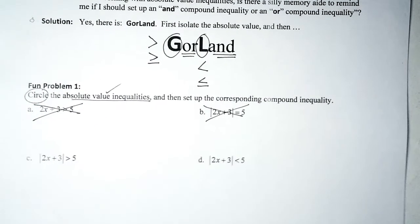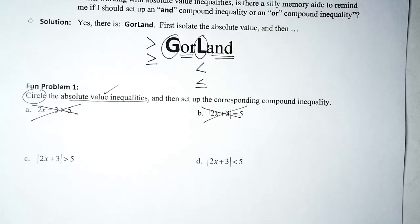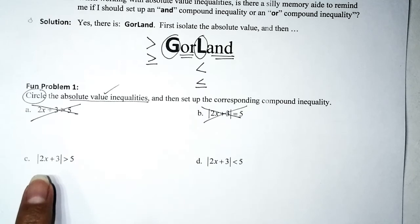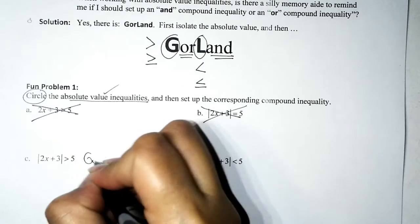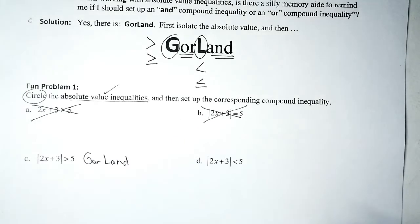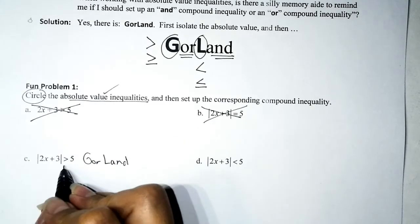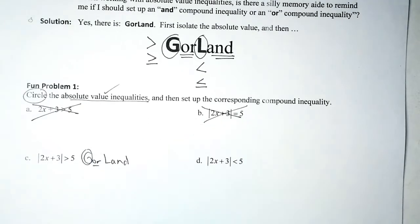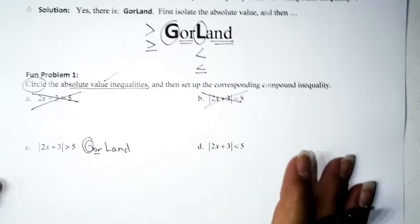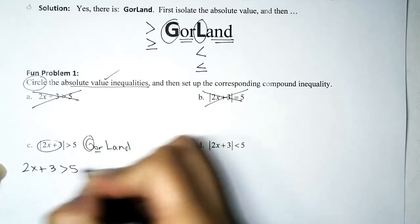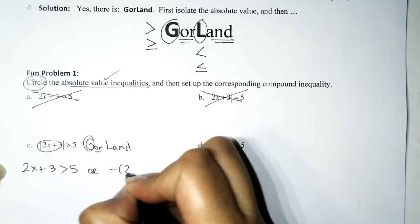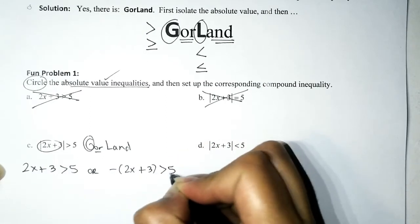Problem C has both an absolute value and an inequality symbol — it's an absolute value inequality. Step 1: make sure the absolute value is isolated. Step 2: set up the corresponding compound inequality. We GORLAND it — we have a greater-than symbol, so this is going to be an OR kind of problem.